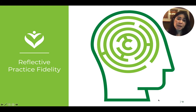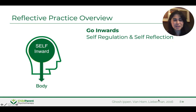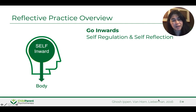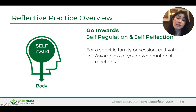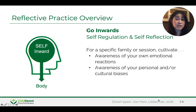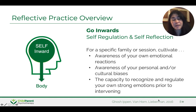Let's start with reflective practice fidelity. This icon is meant to really represent all the things that we might have in our brains—the marbles, the maze, the things that we're trying to navigate. It's very important that we realize that we're not just heads, but that we also have bodies, and that it's important to be integrated. One of our main goals is to be regulated and able to be reflective. When we think about being regulated, we think about how we are aware of our emotions and how that affects our thinking—cultivating an awareness of our emotional reactions, our personal and cultural biases, and the ability to slow down and pause.